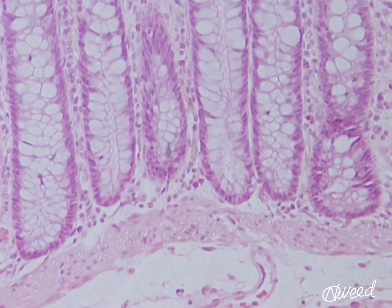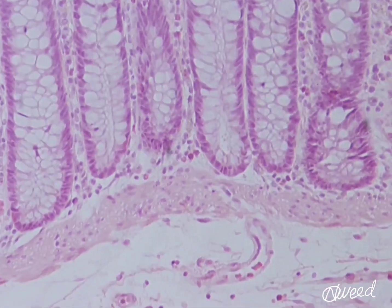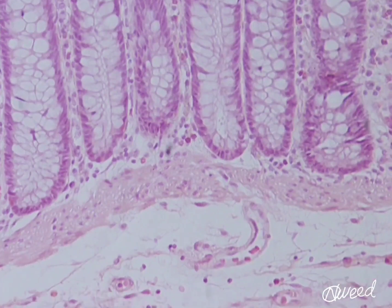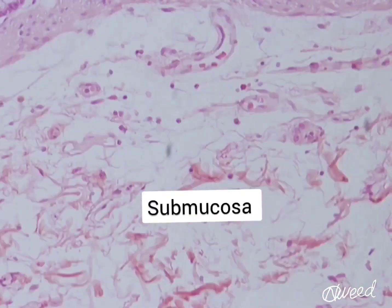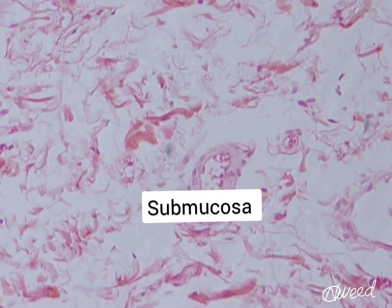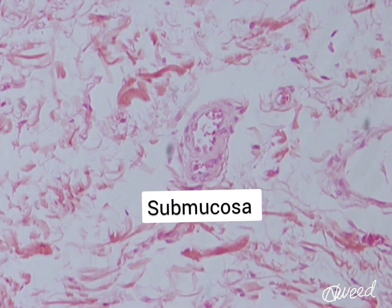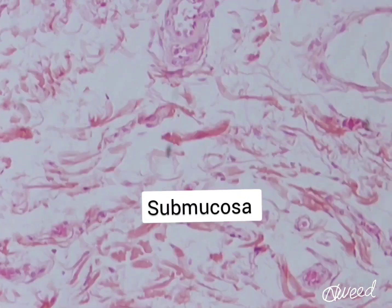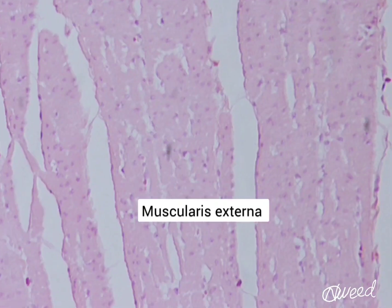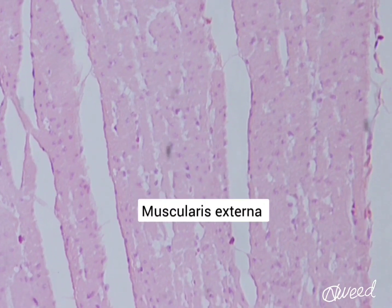The submucosa consists of dense connective tissue, which contains blood vessels, lymphatics, and nerves. The muscularis externa also consists of inner circular and outer longitudinal layers of smooth muscles.